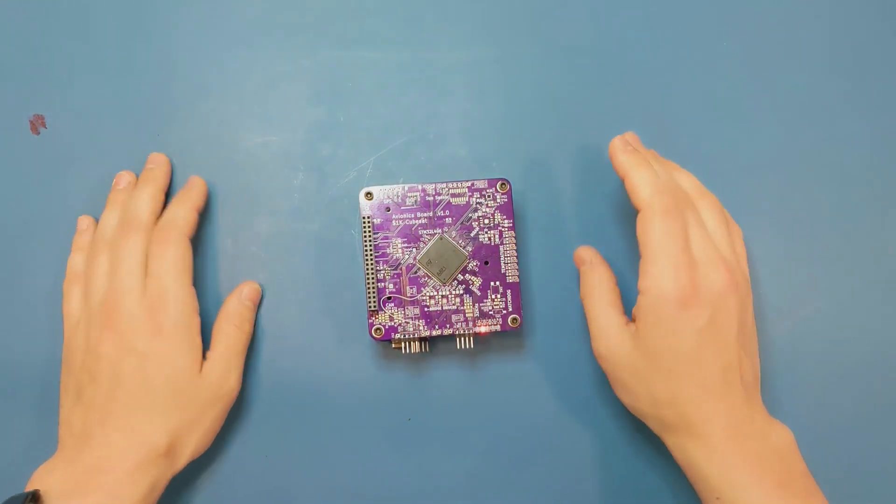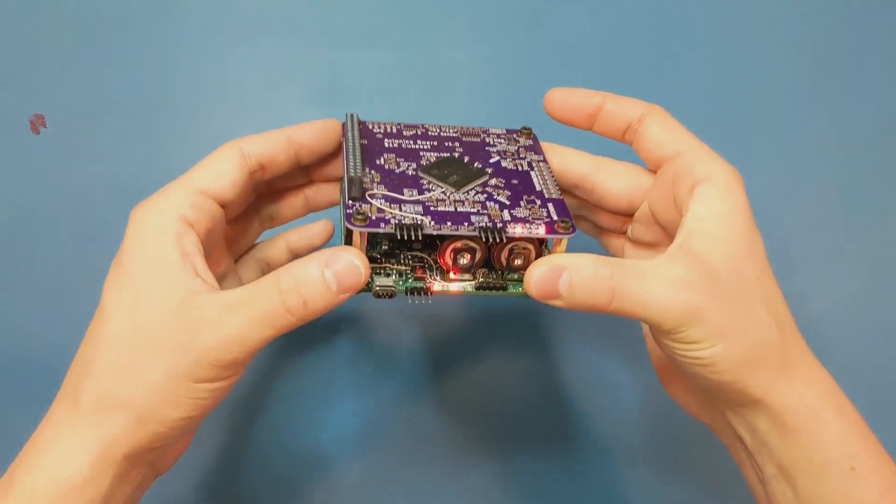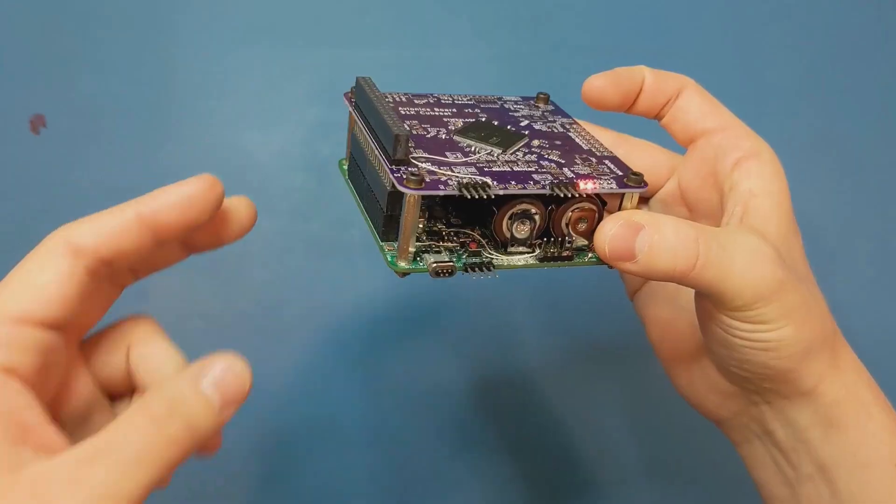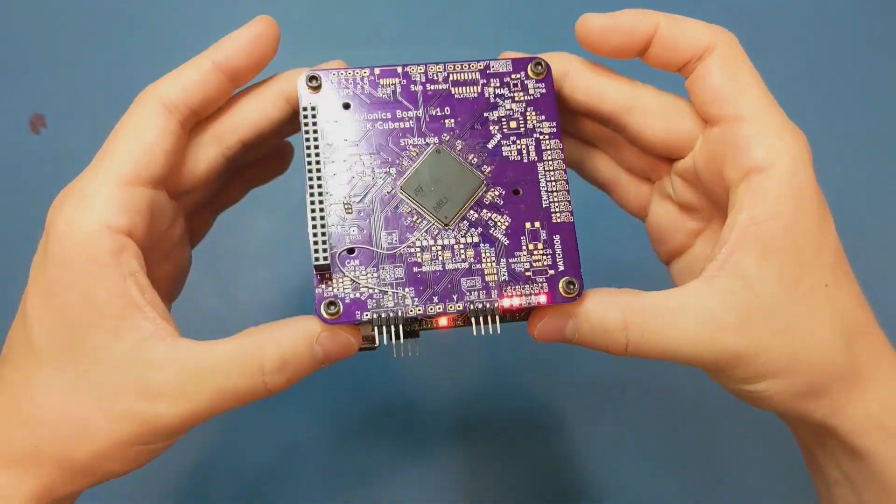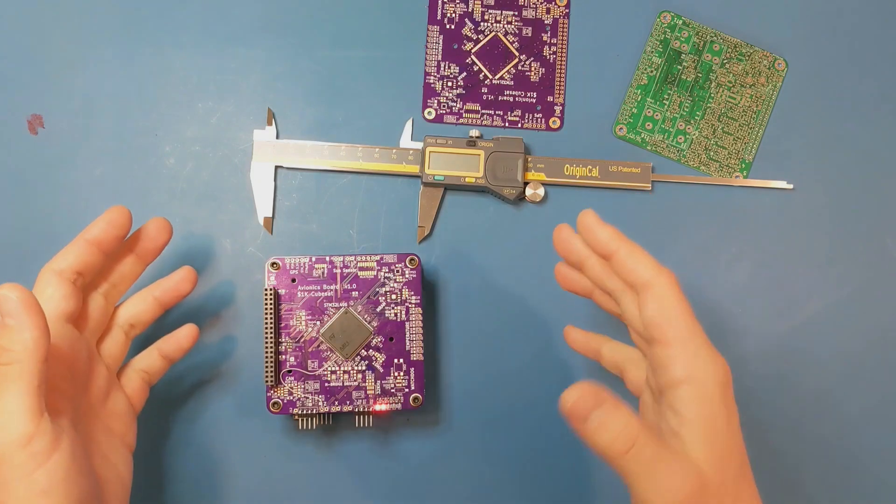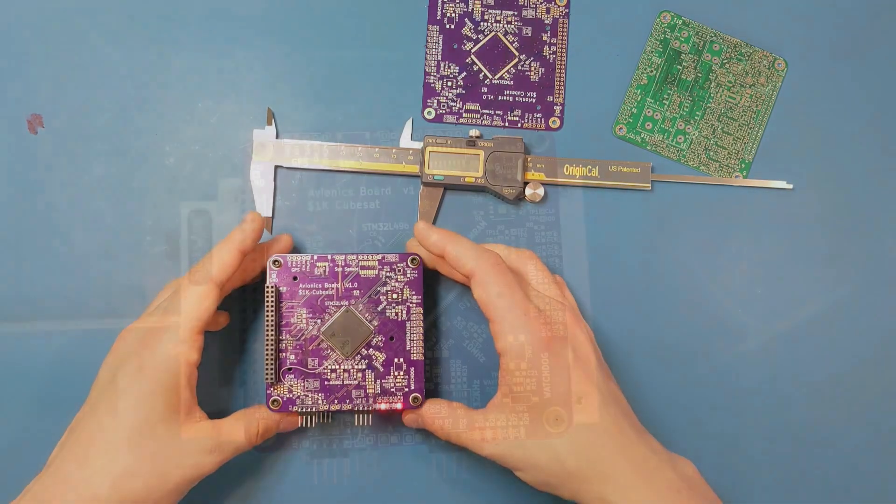I've been working on building my $1,000 CubeSat for 12 videos now, and it's finally starting to look like an actual CubeSat. Two boards, battery powered, and enough software to make it work. So I think it's time that I evaluate where I am on my project of building a $1,000 CubeSat.